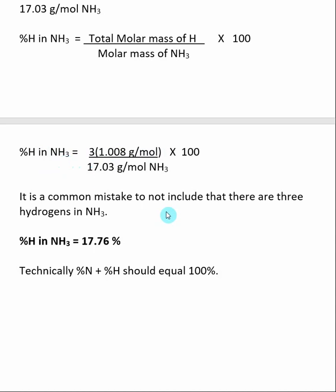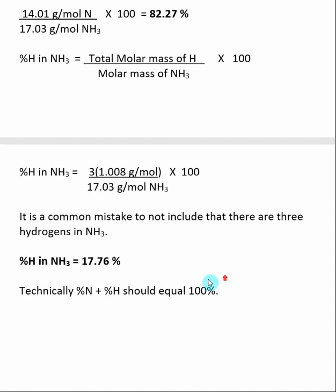Lastly, when you add up all the percent weights of whatever you're looking at, they should always equal 100%. If I have more than two elements, if I add up the percent weight of all the elements, they should equal 100%. Here you can see we came pretty close to it — if we take the percent nitrogen and add it to the percent hydrogen, we get pretty close to 100%. Usually it doesn't come up to be exactly 100% because there will be some slight differences due to rounding error, but it should be very, very close.